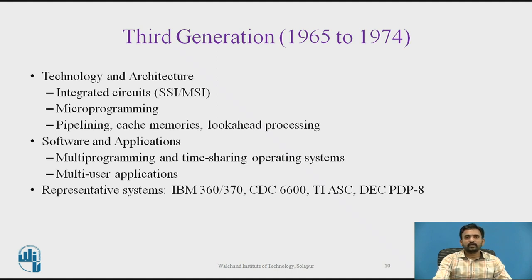In the third generation, from 1965 to 1974, discrete components like transistors, resistors, and capacitors were manufactured and packaged in separate containers, then soldered and wired together on a circuit board. A revolution came in the 1960s when the Apollo guidance computer and Minuteman missile programs helped develop integrated circuits, called ICs. ICs made circuit design more economical and practical. An IC consists of transistors, resistors, and capacitors on a single chip, eliminating wired interconnections and greatly reducing the space required.